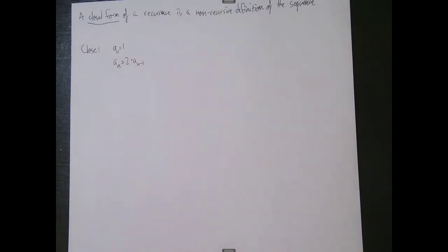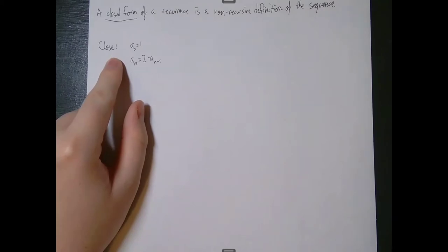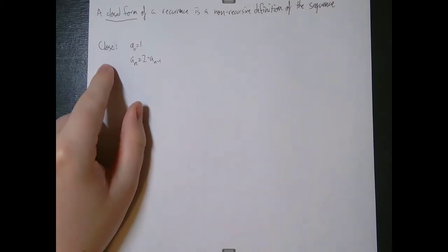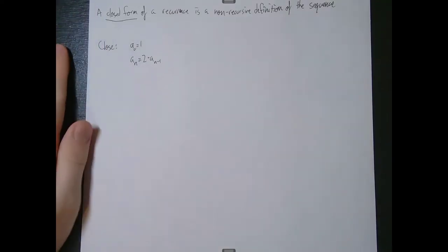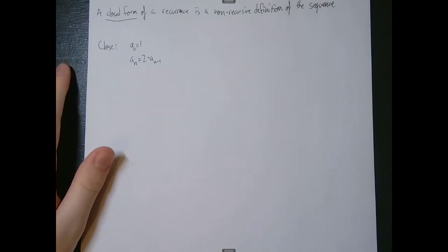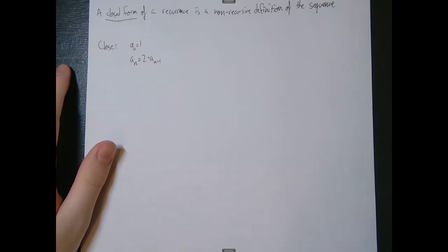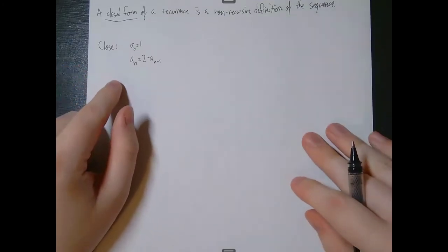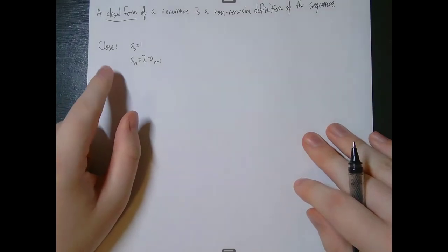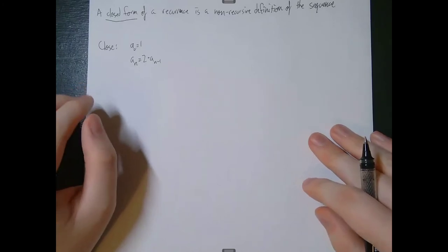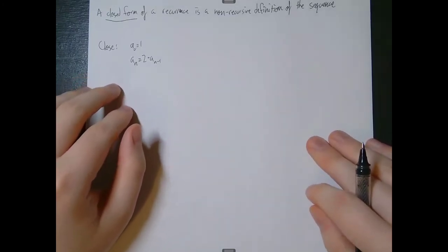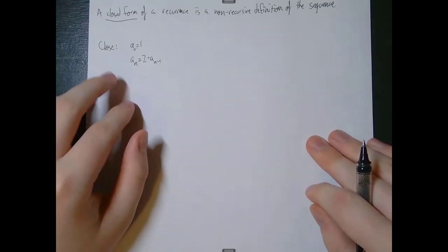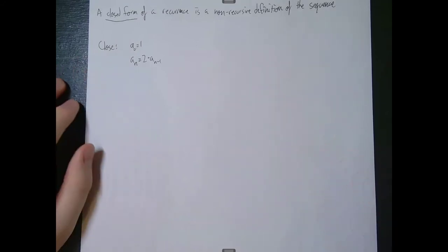For example, if we're trying to close the sequence defined by a sub 0 equals 1 and a sub n equals 2 times a sub n minus 1, we want to define a sub n without using any previous values of our sequence at all. Follow along with this method — once we get to the harder sequences, it will be easier to use this approach to close them. When we want to close a recurrence, we want to express a sub n as something that doesn't have another a term in it.